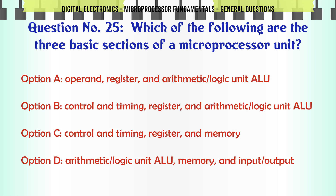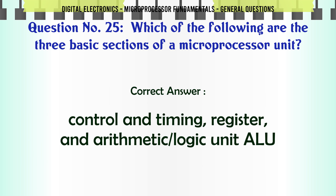Which of the following are the three basic sections of a microprocessor unit? A. Operand, register, and ALU, B. Control and timing, register, and ALU, C. Control and timing, register, and memory, D. ALU, memory, and input/output. The correct answer is Control and timing, register, and arithmetic logic unit (ALU).